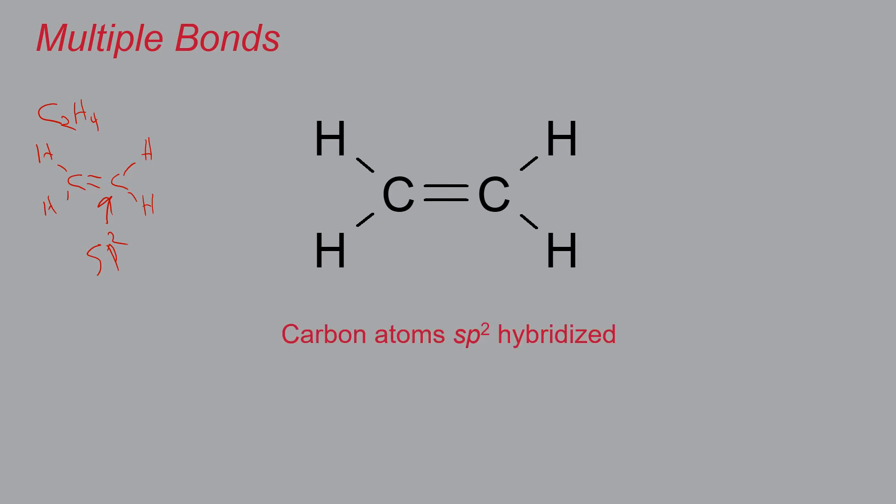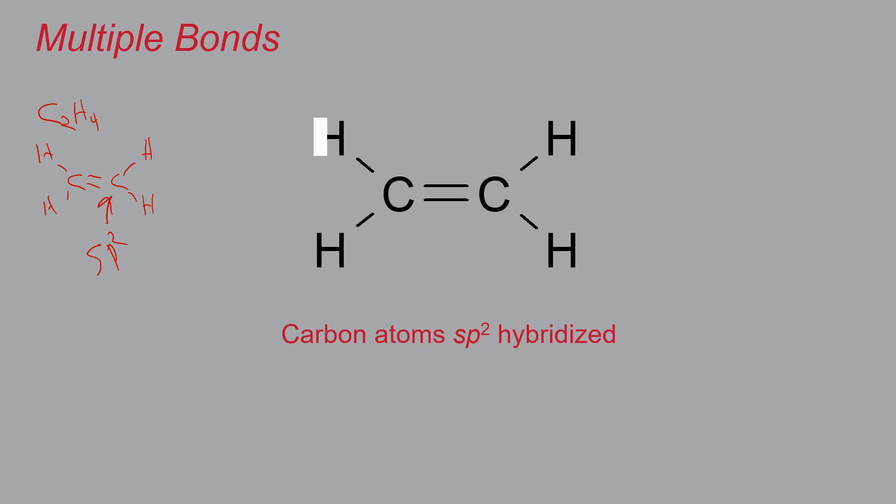Now, from a valence bond theory, it actually looks like this. I've drawn here the various hybrids. So here we've got the three sp2 hybrids on carbon one, and the three sp2 hybrids on carbon two. The single bonds are made by overlap of a hydrogen 1s. This overlap here is what's keeping the hydrogens together, and the carbon-carbon bond here is formed by the overlap of an sp2 electron from one carbon and an sp2 electron on the other carbon.